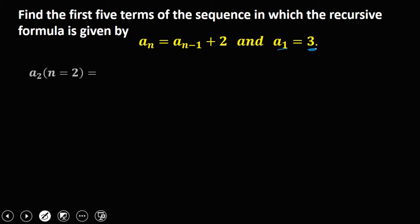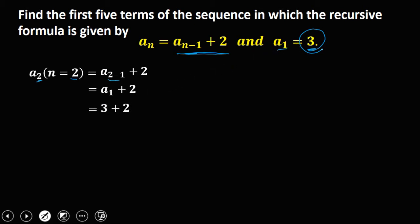Now start solving for a sub 2. For a sub 2, n is equal to 2, then substitute the value into the formula: a sub 2 minus 1 plus 2. So 2 minus 1 gives a sub 1 plus 2. Substituting the value of a sub 1, which is 3, that's 3 plus 2, so a sub 2 is 5.